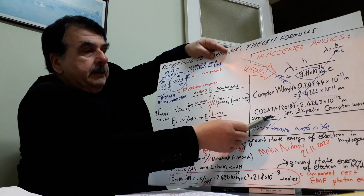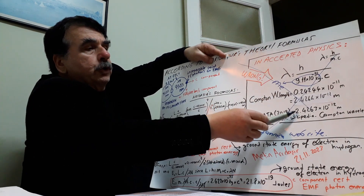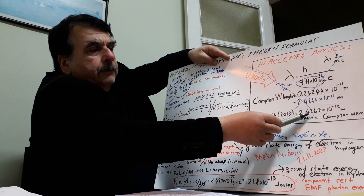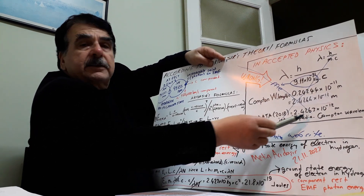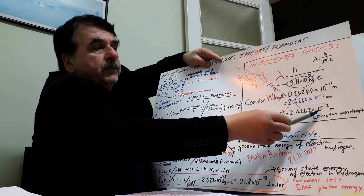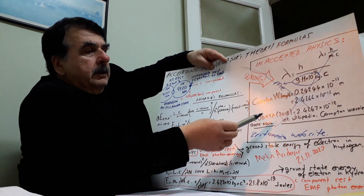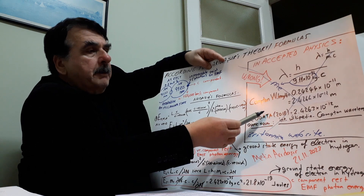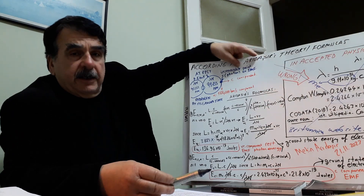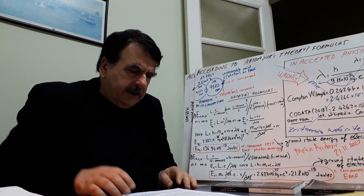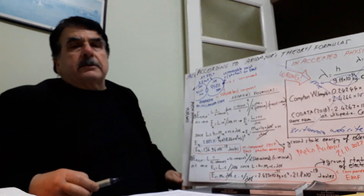CODATA 2018 gives 2.4263×10⁻¹² meters for the Compton wavelength of an at-rest electron. This is wrong.